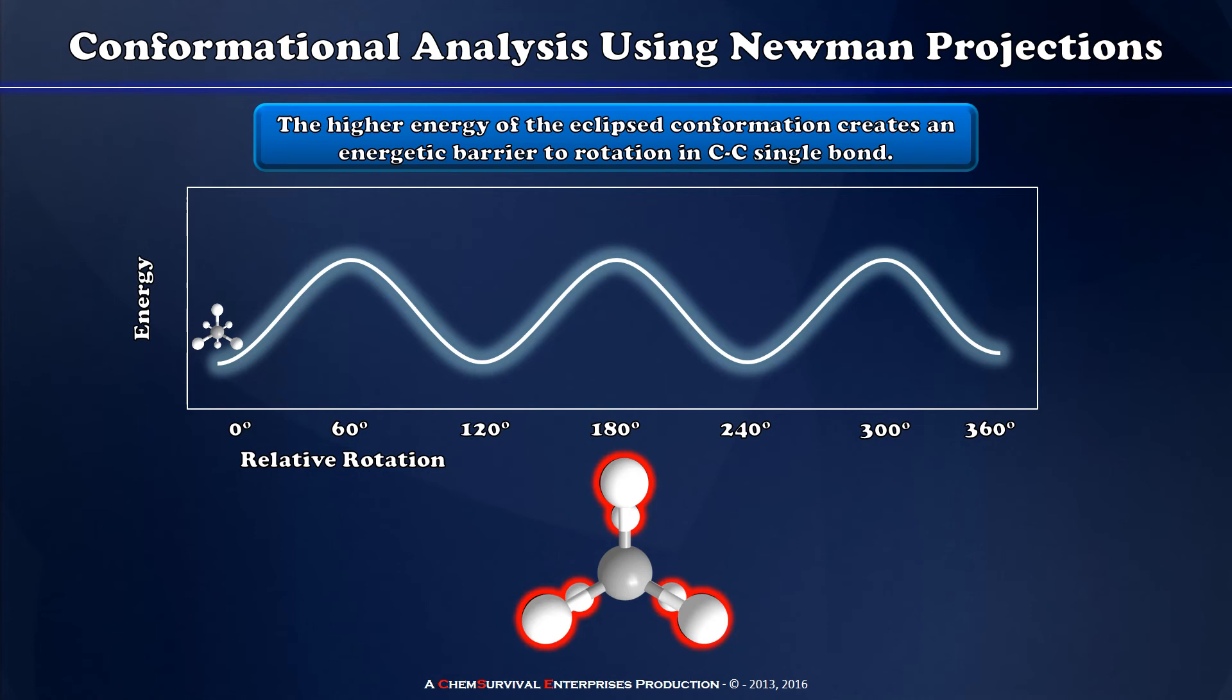What this means is that having rotated this carbon-carbon bond by 60 degrees creates a higher energy rotomeric state. In the case of ethane, this difference is about 12.5 kilojoules per mole.